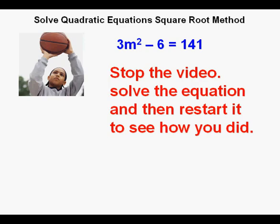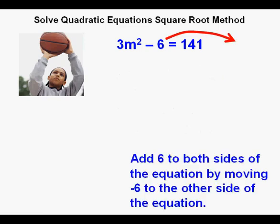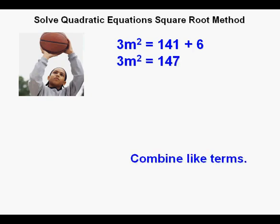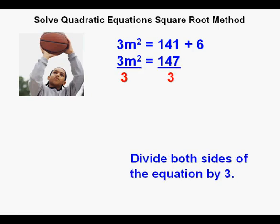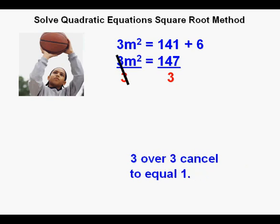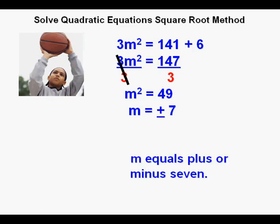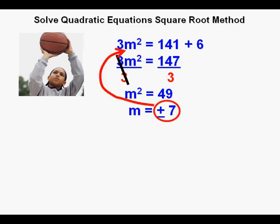Joe's first step was to clear out the minus 6 on the left side of the equation by adding it to the right side of the equation. The equation becomes 3m squared equals 141 plus 6, and that simplifies to 3m squared equals 147. He divides both sides of the equation by 3, cancels 3 over 3 on the left side of the equation to equal 1. We have m squared equals 49. Since 49 is 7 times 7, m simplifies to plus or minus 7.